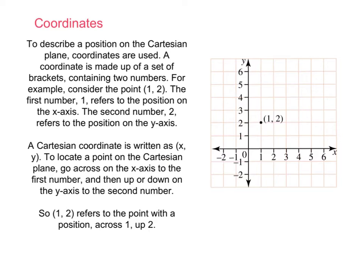So, to describe a position on this Cartesian plane, we use a coordinate. And a coordinate is made up of a set of brackets containing two numbers. For example, we consider the point (1, 2). The first number refers to the position on the x-axis, so our horizontal axis. The second number refers to the position on the vertical axis, or the y-axis.